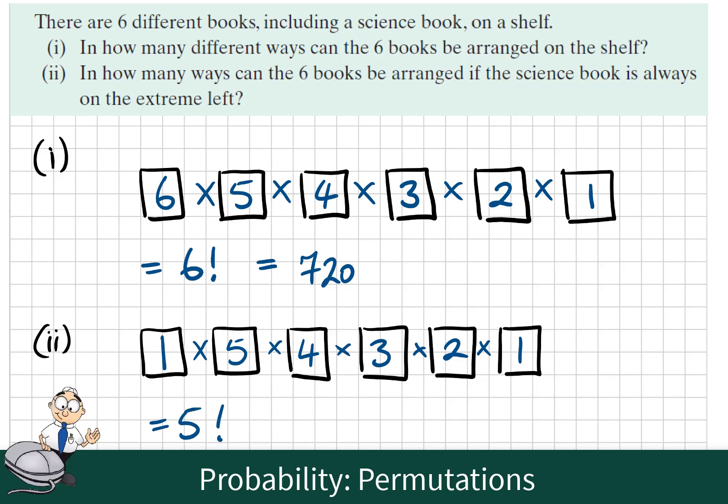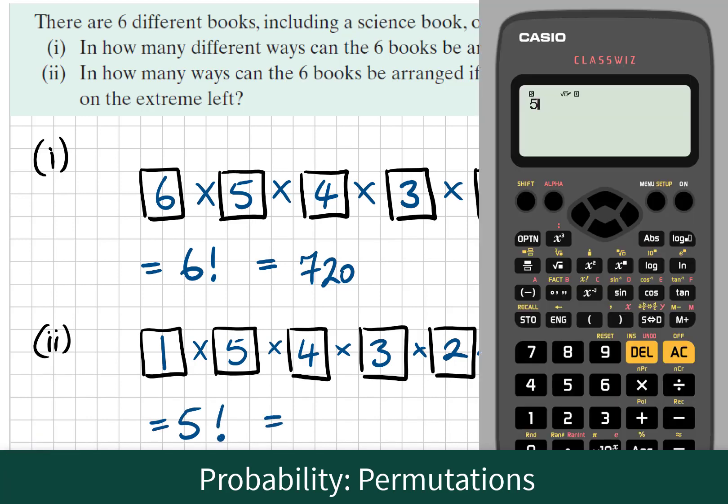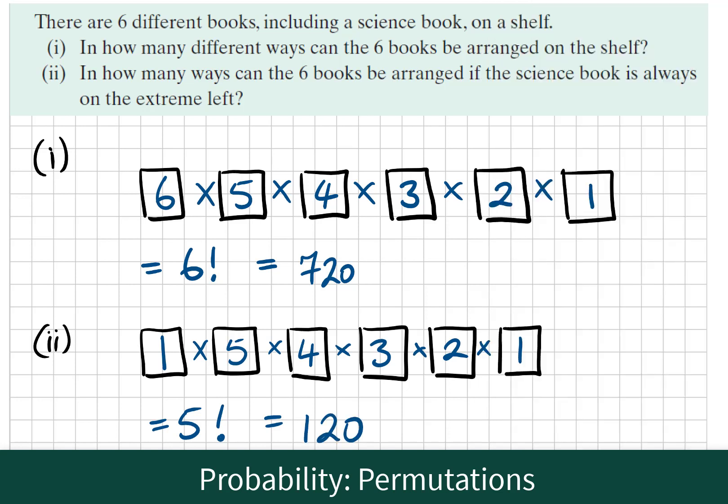So again taking out the calculator we will evaluate five factorial and we see the answer is 120. If you write in your calculator 5P5 you see you get the same answer.